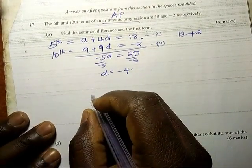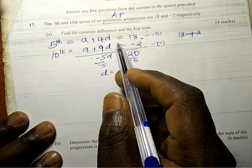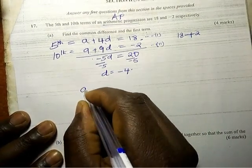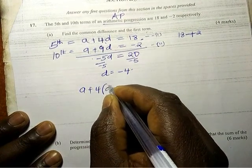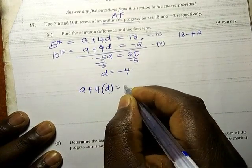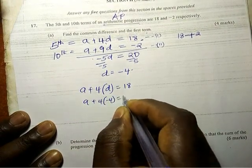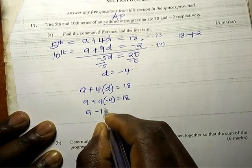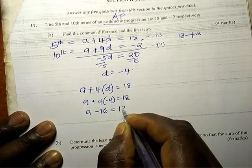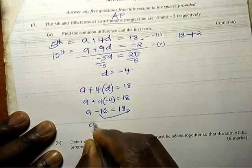Our next one, we want to get now the value of a. We can substitute either in one of them, this one or that. So a plus 4d equal to 18, so a plus 4 into negative 4, the answer is 18.